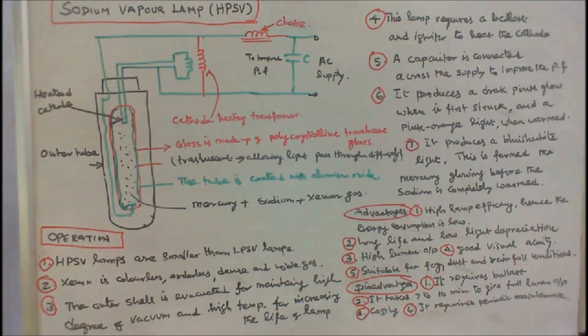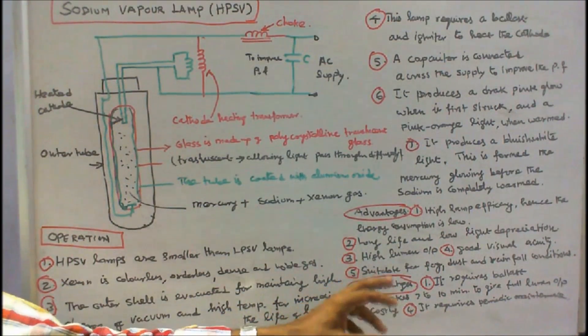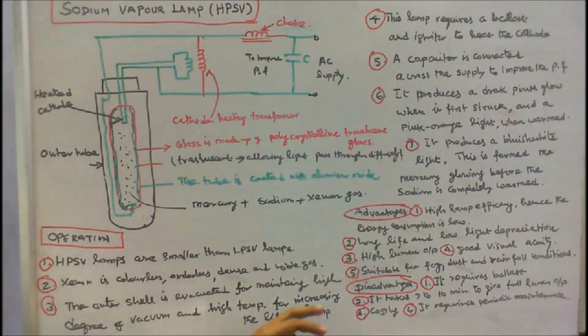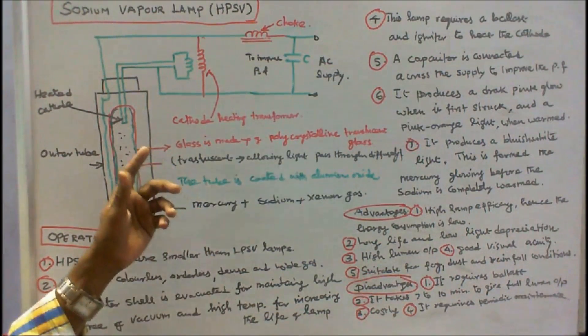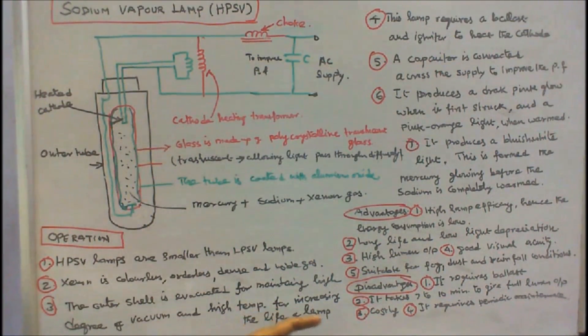Disadvantages are: 1. It requires ballast. 2. It takes 7 to 10 minutes to give full warm output. 3. It is costly. 4. It requires periodic maintenance. These are all the disadvantages of high pressure sodium vapor lamp.